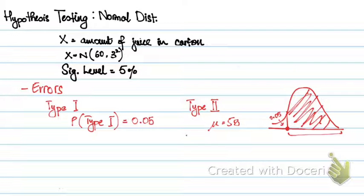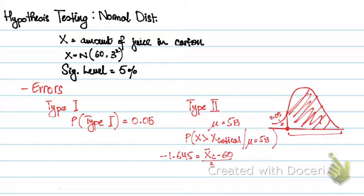Probability of X greater than your x-critical, given that the mean is 58. So first, let's calculate x-critical. My z-critical from the previous video was minus 1.645. So x-bar critical minus μ, that was 60, upon the variance, that is 3 over root 12. So my x-bar is 58.6.